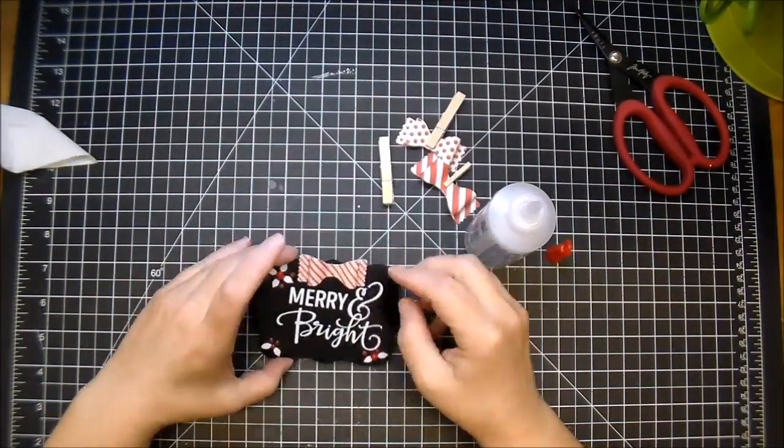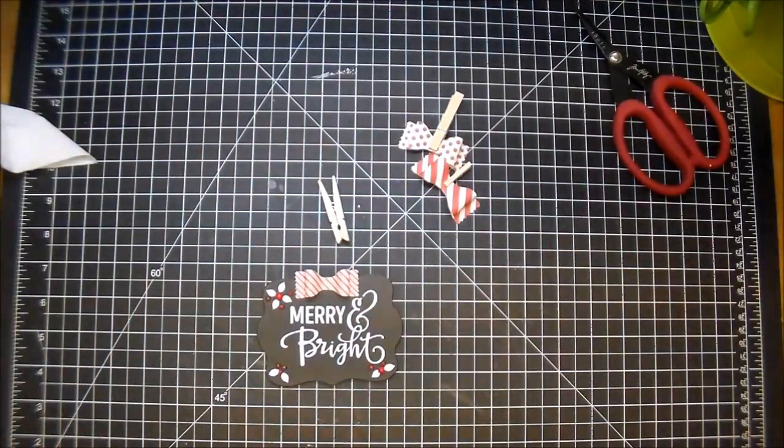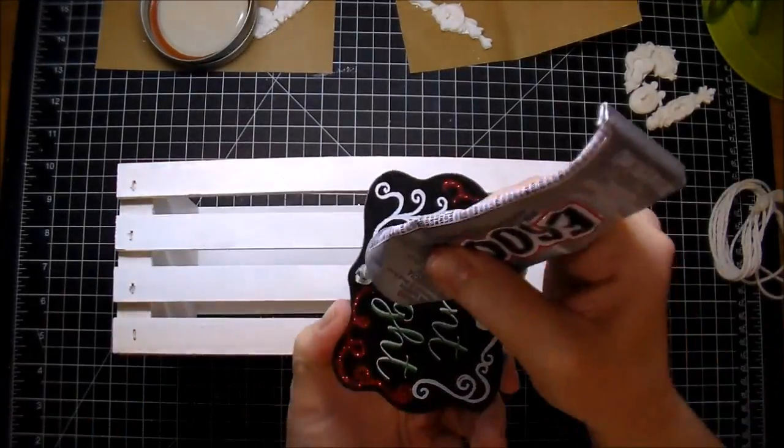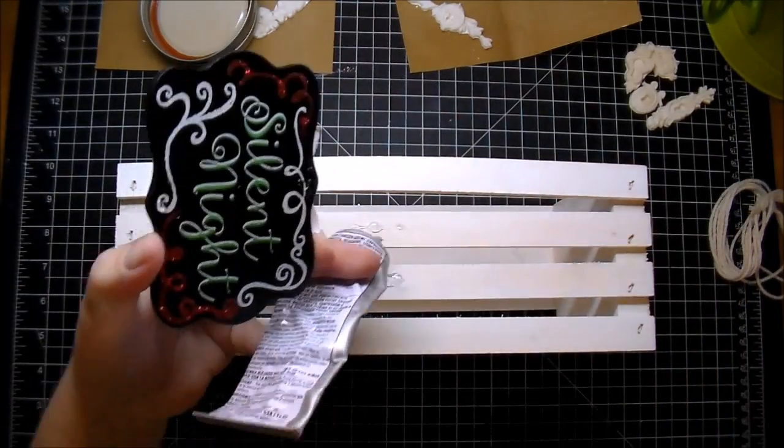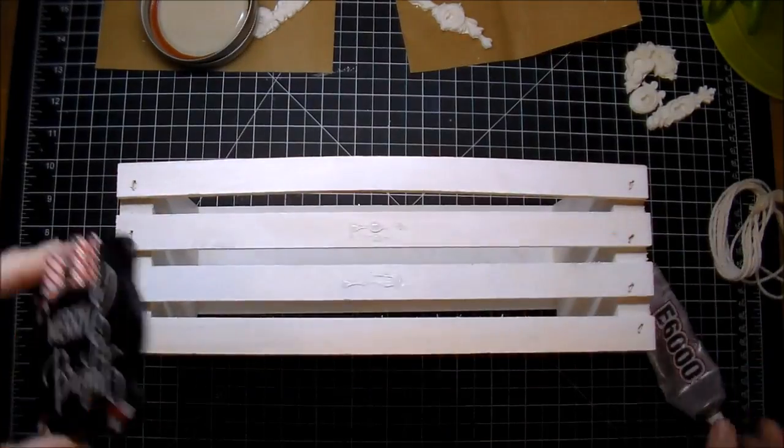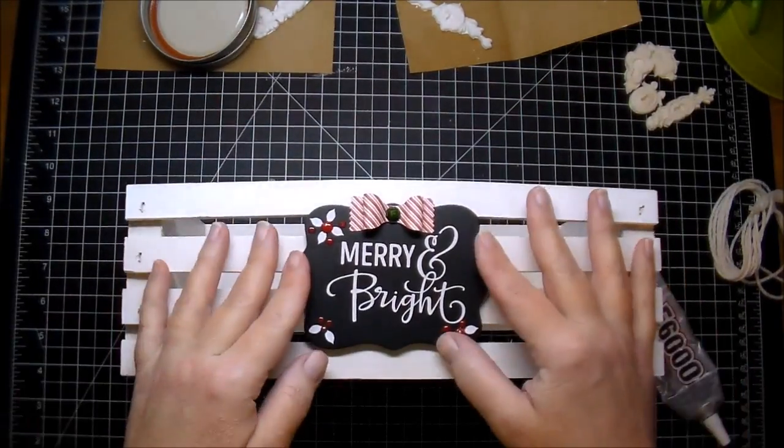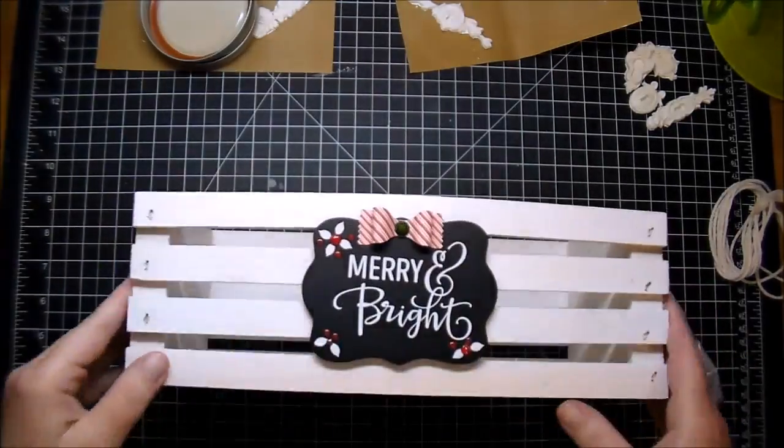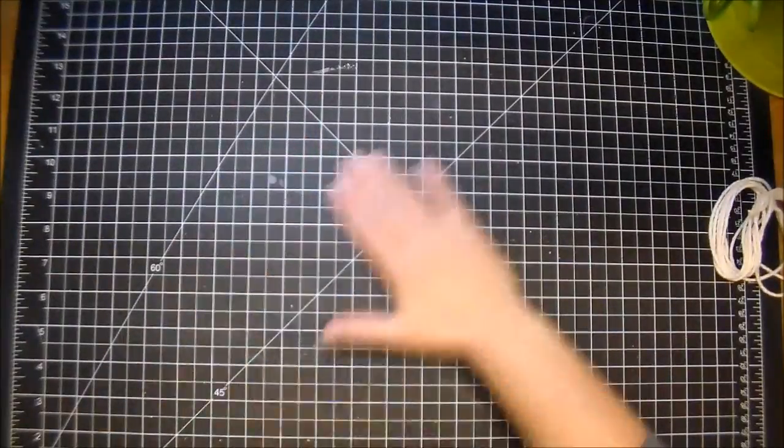I'm just using some Fabri-Tac, I'm adhering that down. I'm letting that dry in the meantime. And now I'm using some E6000 to the front of my crate to adhere that down. Once I was happy with that, I set something heavy on it and let it sit for a few hours.